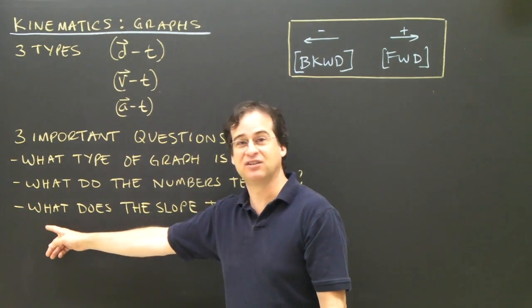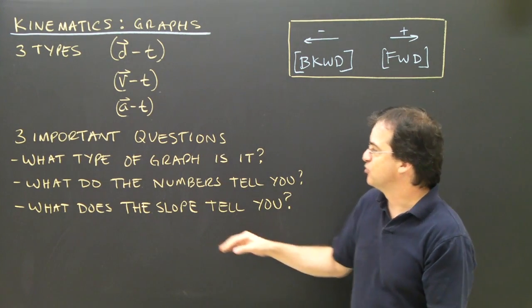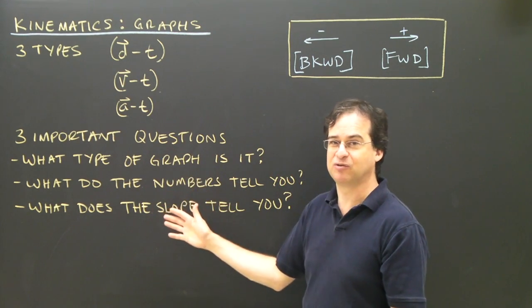And the last thing is, we're going to take the slope of the graph, and the slope tells us something about what the object is doing. So every time we look at a graph, we're going to ask these three questions, and using these three questions, we're going to be able to describe what the object is doing.